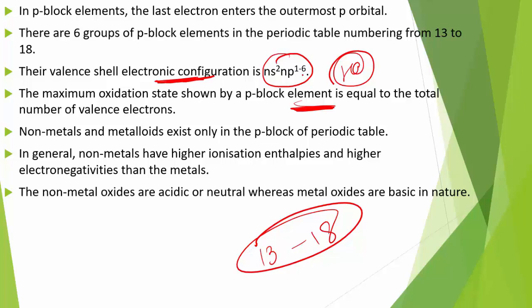As we go to the right of the periodic table, from groups 13 to 18, the oxidation state increases. P-block elements also show other oxidation states which normally differ from the total number of valence electrons by one or two units. For example, Group 13 has a group oxidation state of +3, but other oxidation states are also seen.